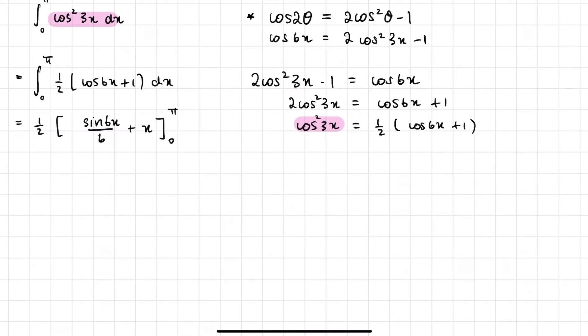Now we can substitute and evaluate this integral. So sine 6π on 6 plus π, minus if we substitute 0 in everywhere we should get 0.